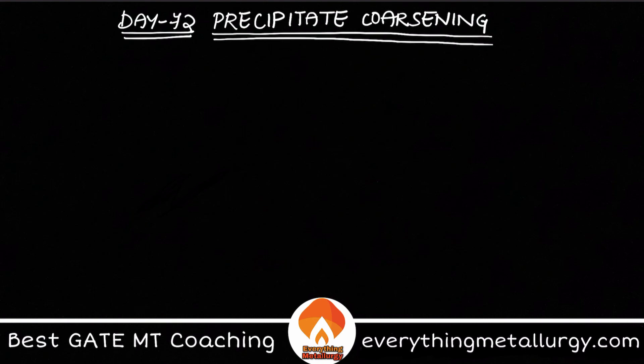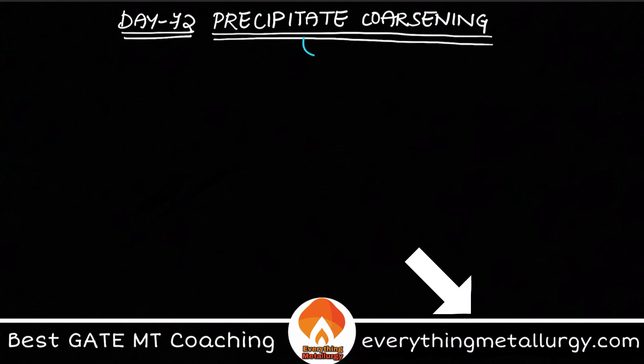Hello guys, welcome to Everything Metallurgy and welcome to day 72 of 100 days, 100 concepts. Today in this video we are going to discuss a new concept, or you can say a newly added concept in physical metallurgy, which is precipitate coarsening. We all know what precipitation hardening is and how it improves the strength of an alloy or a solid solution.